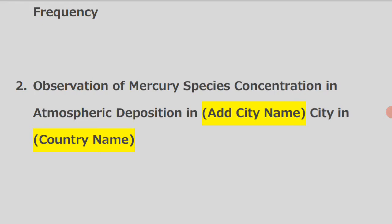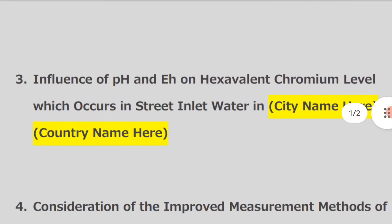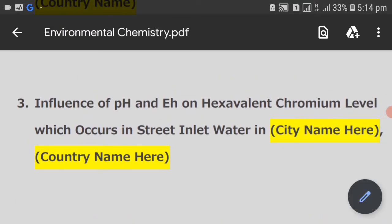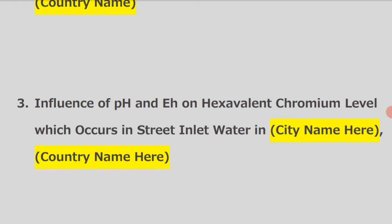The second topic continues — add the university and location to complete this research title. The third one is: influence of pH and Eh on hexavalent chromium levels, which occurs in street runoff water — add your city and institution to complete this research title.